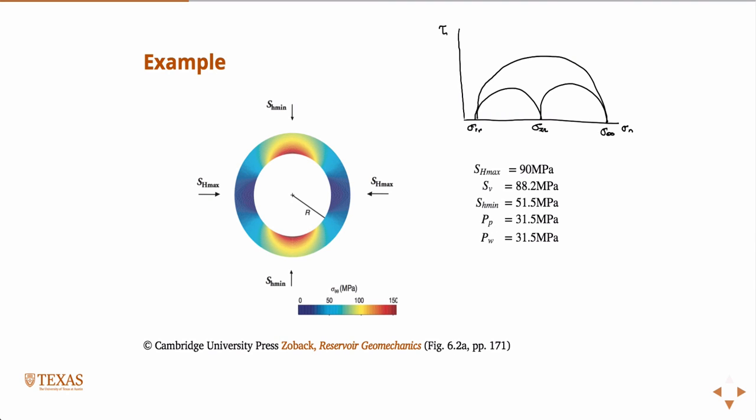At the wellbore wall, sigma_rr corresponds to delta p, and that's zero in this case. So really sigma_rr is going to be zero essentially. So in that scenario, if we looked at a failure model, it's really only going to be controlled by sigma_theta_theta. And so this plot is of sigma_theta_theta.